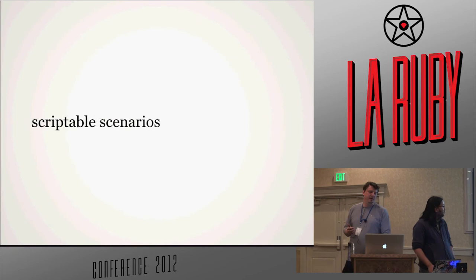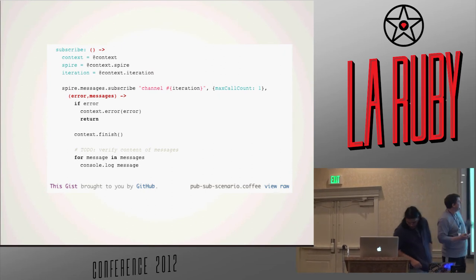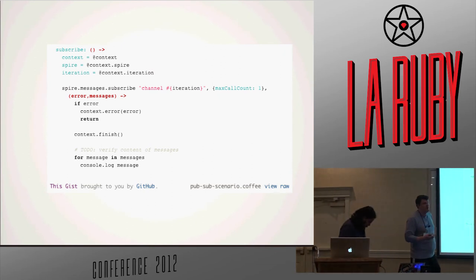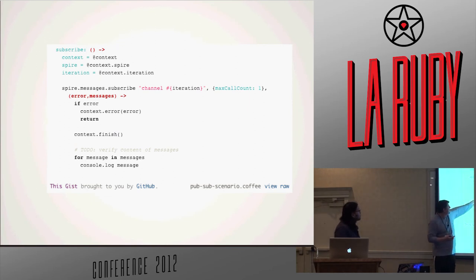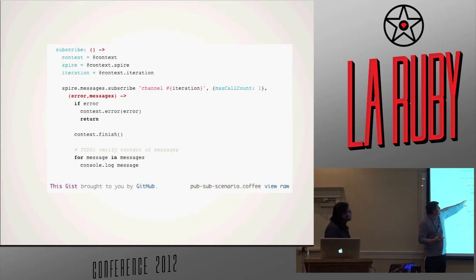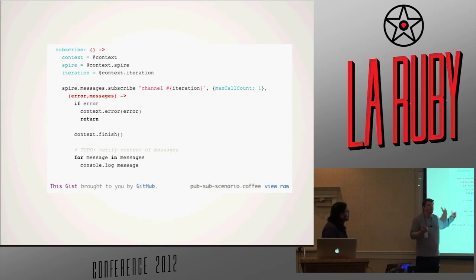The next piece was to start encapsulating bits and pieces of user behavior as functions. Here's an example testing our Spire.io messaging service — we're just encapsulating a subscribe. Right here you can see we're saying the test has finished. There's nothing complicated or fancy about this. We just embed right in the scripts where tests start and finish, and that gives us a great deal of flexibility in terms of how we set up our test scenarios.